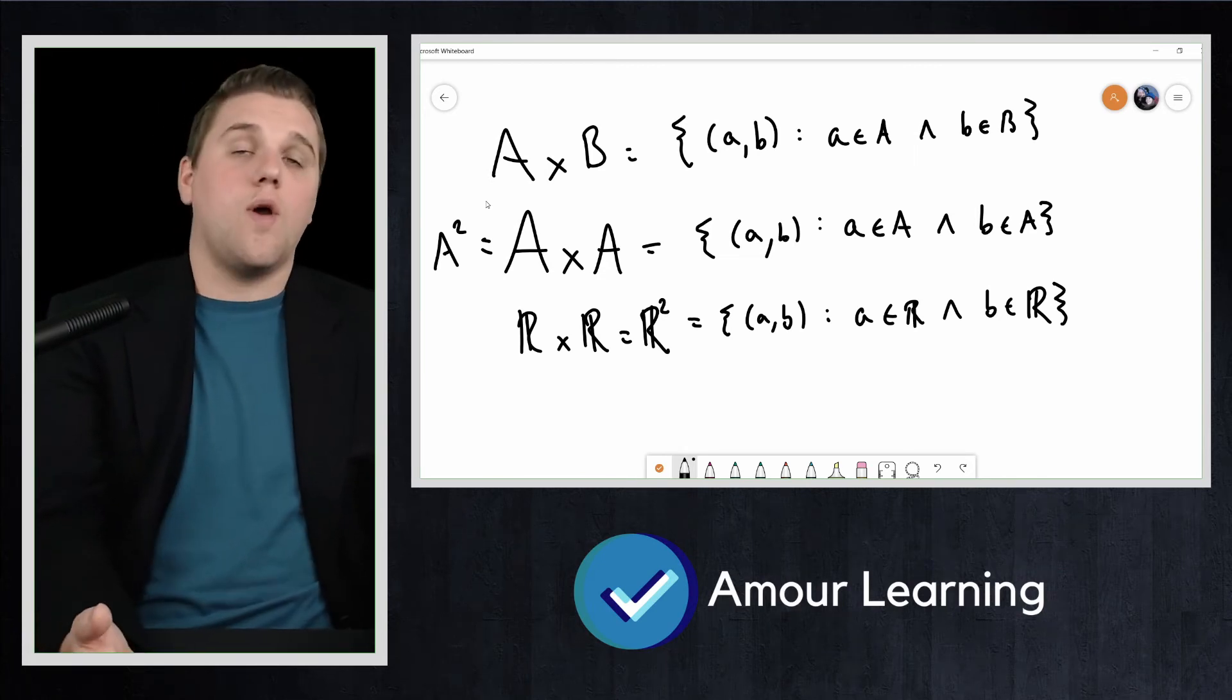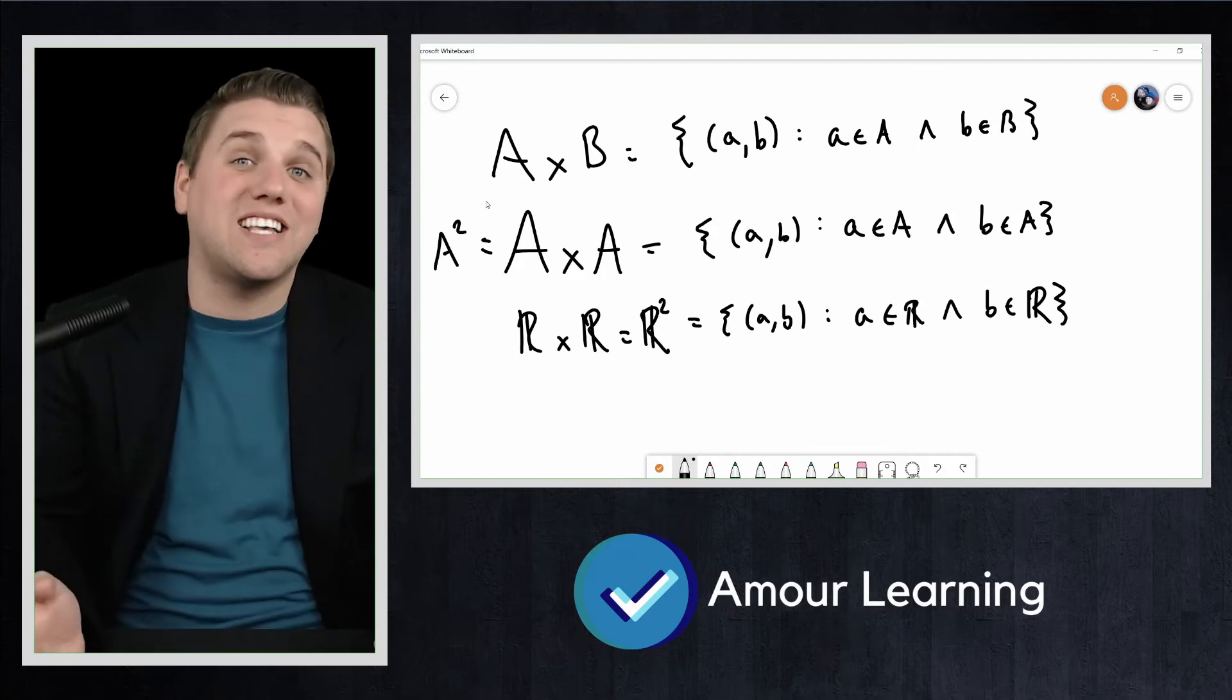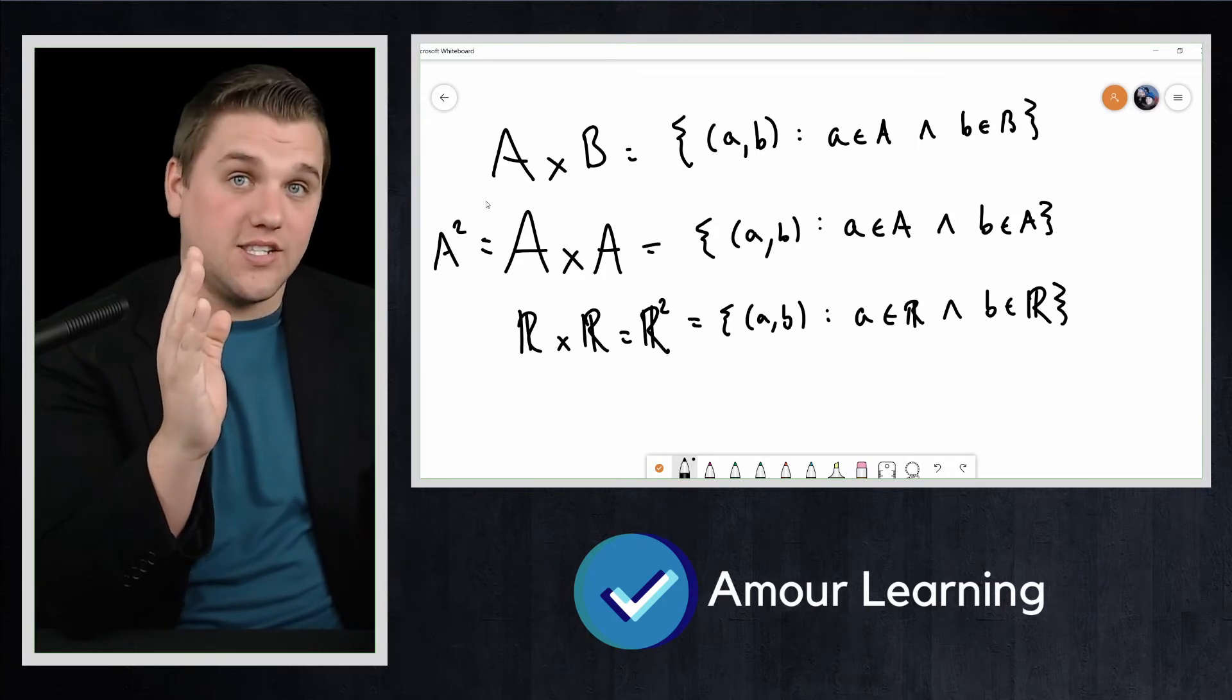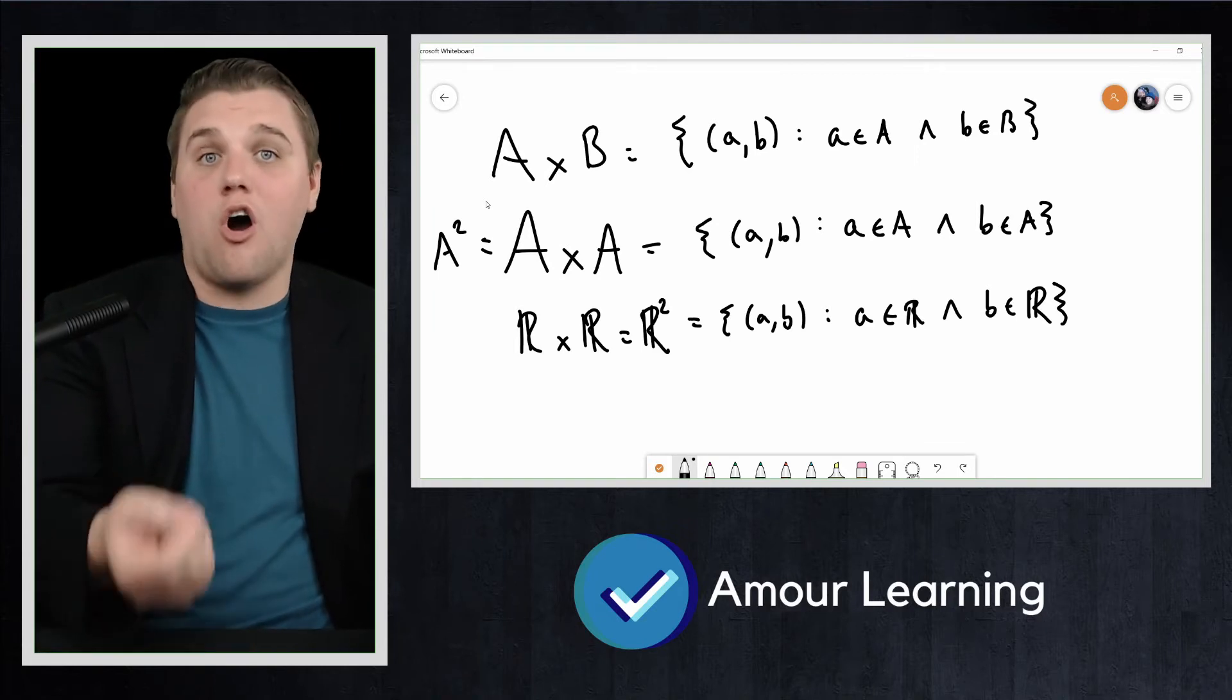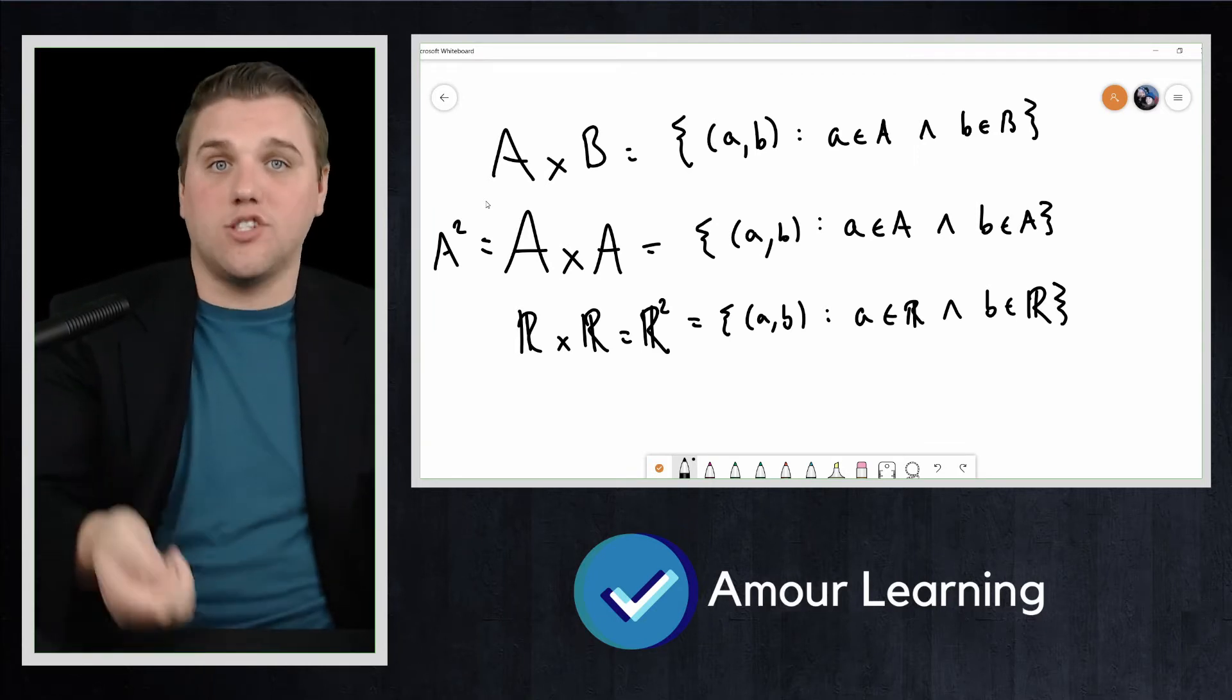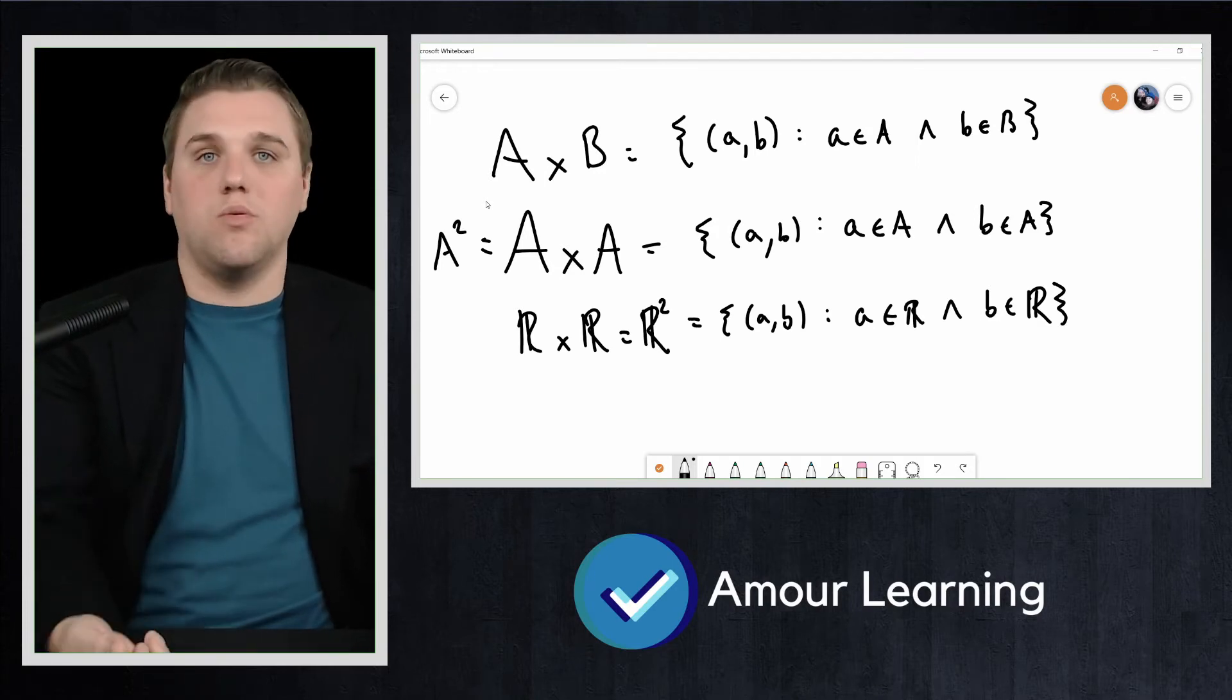...you've seen the coordinate plane where you have both an x-axis, a y-axis, and a z-axis. So this is crossing R with itself, the Cartesian product of R three times. So it's R cross R cross R, or R cubed, R³.